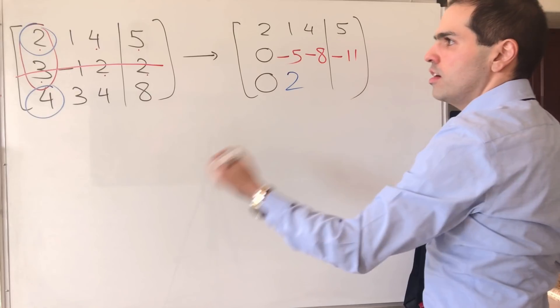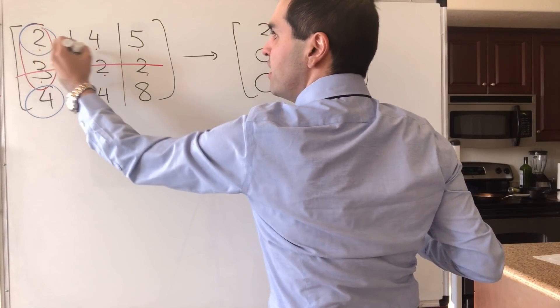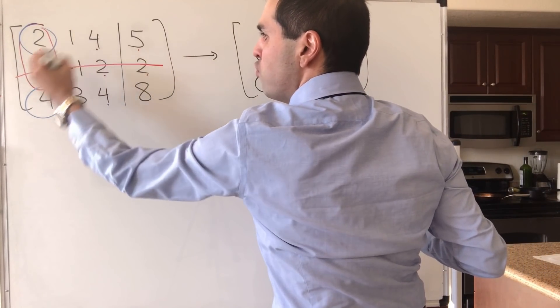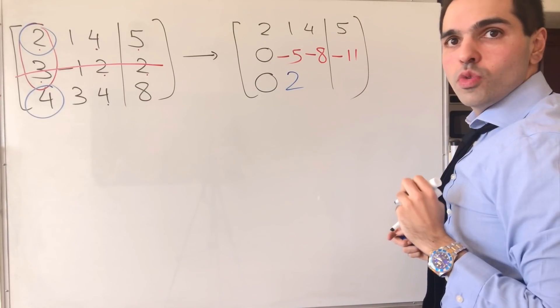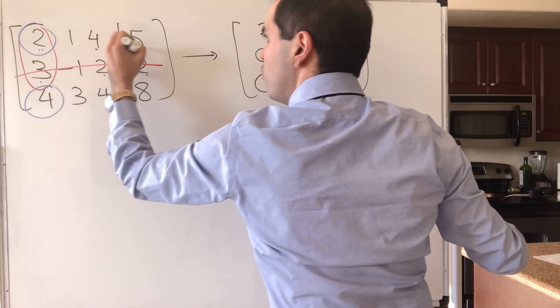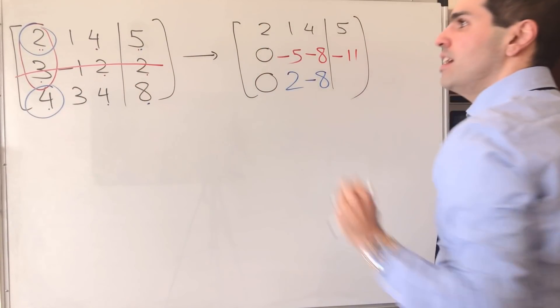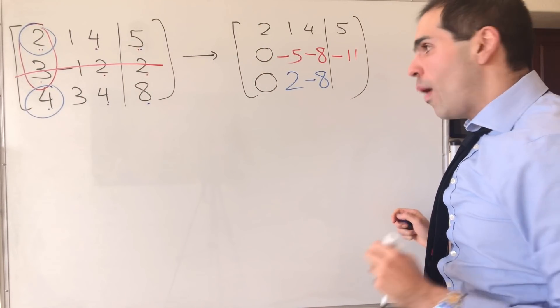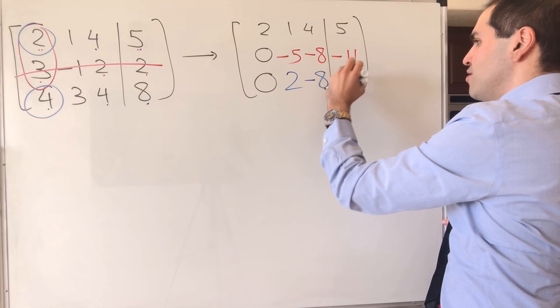And then you take the determinant of 2, 4, 4, 4. So 8 minus 16, that's minus 8. And lastly, 2, 5, 4, 8. And that is 16 minus 20, which I believe is minus 4.